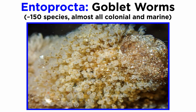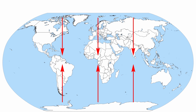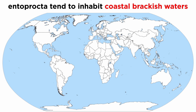There are only about 150 species of goblet worms, nearly all of which are colonial and all but two species are marine. They can be found from polar regions all the way to the tropics, though they are often restricted to coastal and brackish waters where they colonize shells and algae.